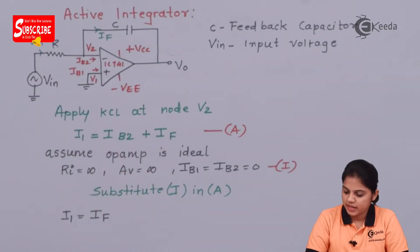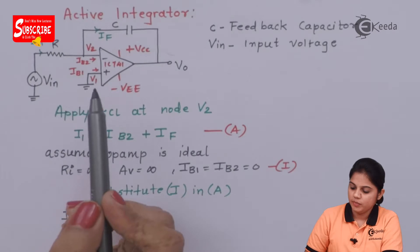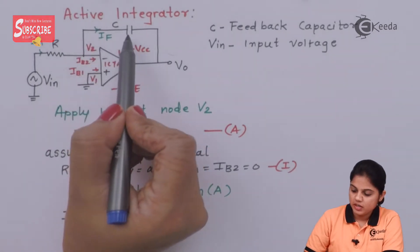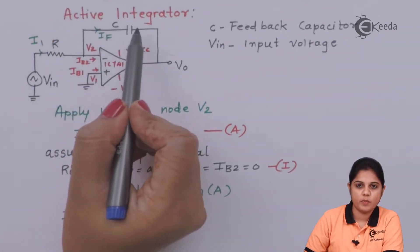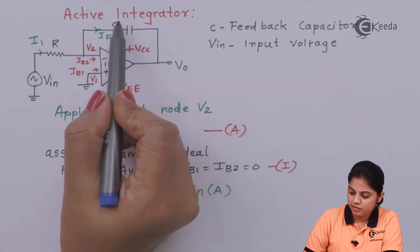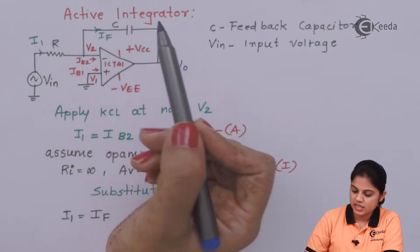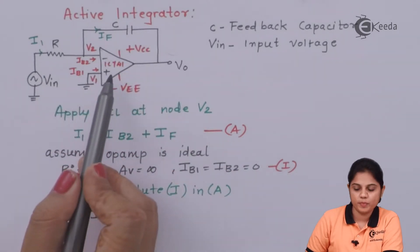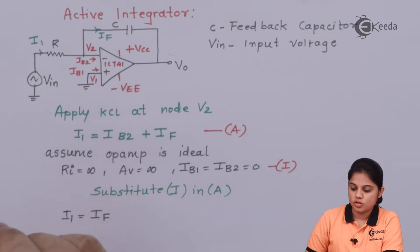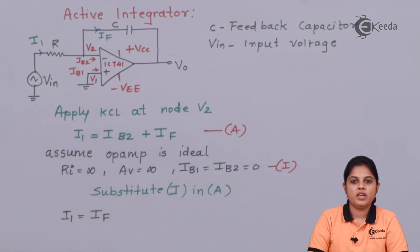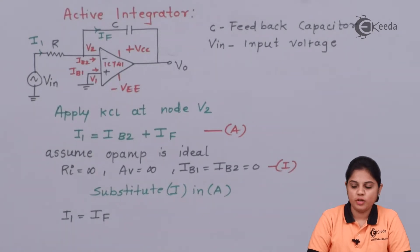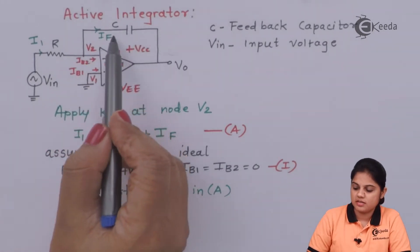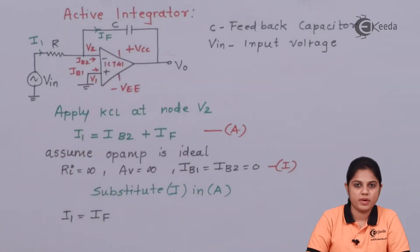If you see the circuit diagram carefully, here instead of a resistance connected in the feedback we have connected a capacitor. That is the only difference you can see between an inverting configuration op-amp and an integrator. So an inverting configuration of an op-amp can be used as an integrator if you replace the feedback resistance with a capacitor.